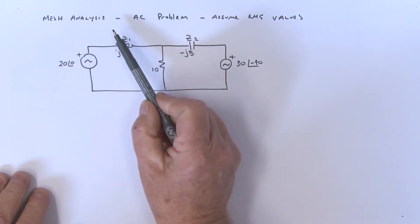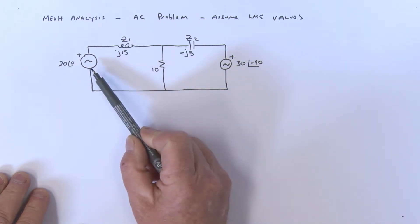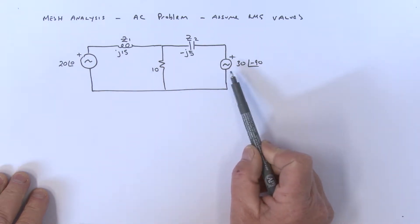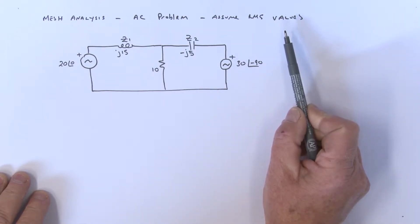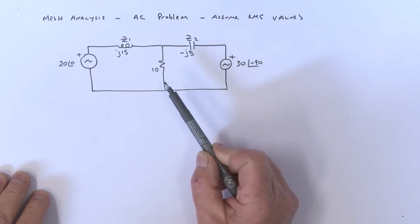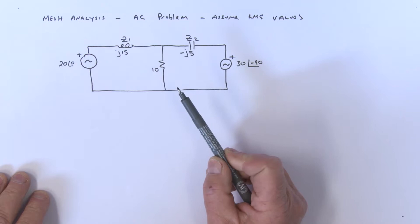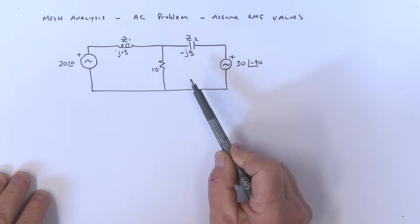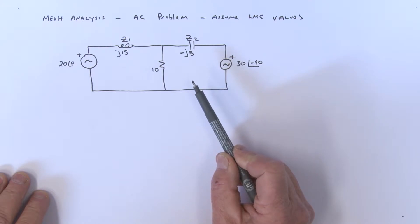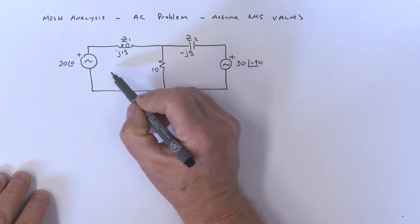Let's have a look at this problem. Here we're looking at AC sources — both of these sources are of the same frequency. We're assuming RMS values and this is a steady-state sinusoidal response that we're going to be looking at. We're going to use mesh analysis and have a look at how we would find those mesh currents I1 and I2.